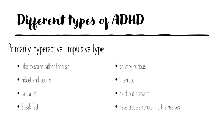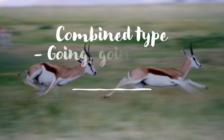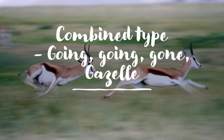Like Dory in Finding Nemo: 'My thoughts, they leave my head.' The second presentation of ADHD is the primarily hyperactive-impulsive type — they like to stand rather than sit, fidget and squirm, talk a lot, speak fast, be very curious, interrupt, blurt out answers, and can have trouble controlling themselves. This type of ADHD is sometimes called the 'high-spirited hummingbird.'